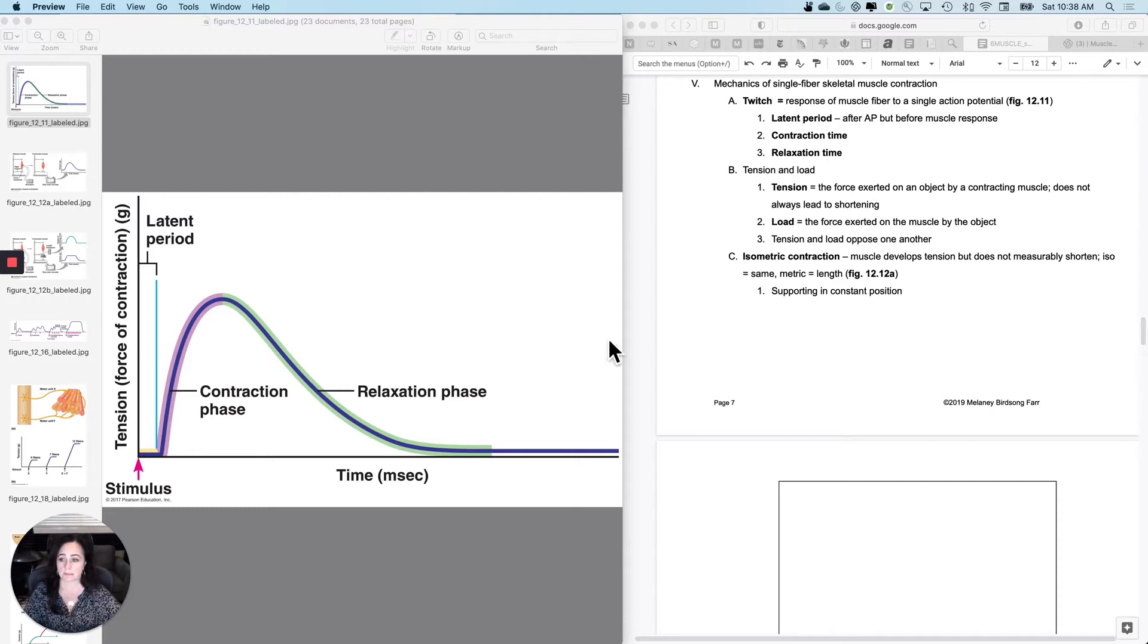It's got the latent period. The latent period, you see, here's the stimulus, that's when the stimulus occurred, which would be in the body when I actually hit threshold and I got an action potential. And then the latent period is before the actual crossbridge cycling starts to occur. So we'll talk about what's going on during the latent period, and then the contraction phase or contraction time, and then the relaxation time.